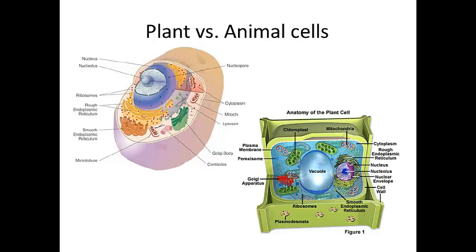Plant versus animal cells: some organelles found in plant cells but not animal cells include the chloroplast for photosynthesis, a large central vacuole which squeezes the nucleus over to the side of the cell, and the cell wall around the outside. Organelles found in animal cells but not plant cells include the centrioles, which are involved in cell division, and the lysosome — although this is hotly contested among cell biologists, some textbooks say lysosomes are only found in animal cells.